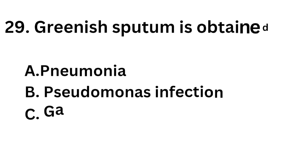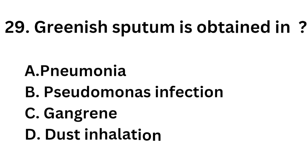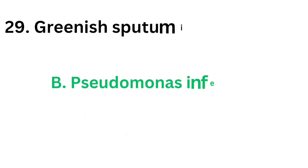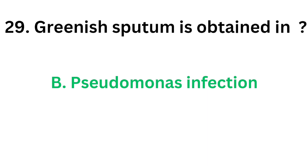Question number 29: Greenish sputum is obtained in which condition? Option A: Pneumonia. Option B: Pseudomonas infection. Option C: Gangrene. Option D: Dust inhalation. The correct answer is Option B: Pseudomonas infection. In Pseudomonas infection, greenish sputum is obtained.